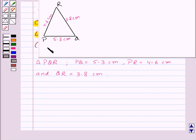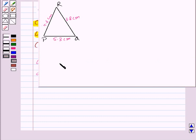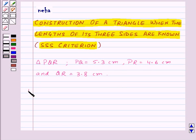Now let us start the construction of triangle PQR. First of all, let us draw the line segment PQ of length 5.3 cm. So here we have line segment PQ of length 5.3 cm. Our first step of construction is to draw a line segment PQ of length 5.3 cm.